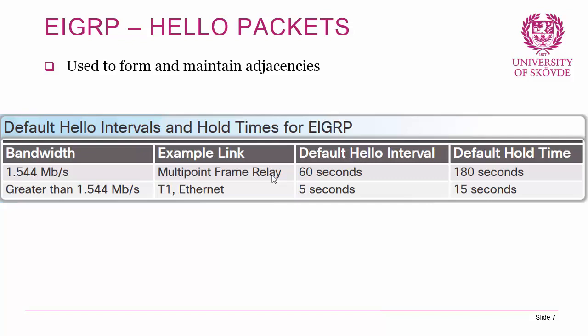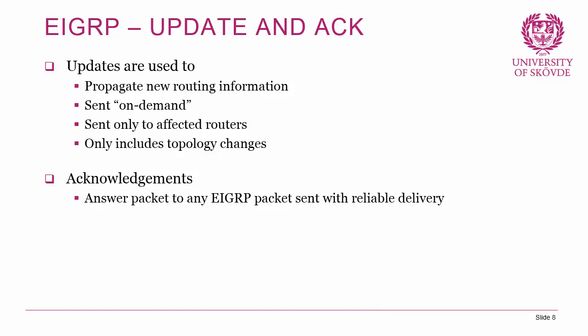The default hold time is three times the hello interval — 180 seconds for slow links and 15 seconds for faster modern links. So if routers A and B have formed an adjacency, they send hellos every 5 seconds. If router A stops receiving hellos from router B, it waits 15 seconds before declaring router B dead.